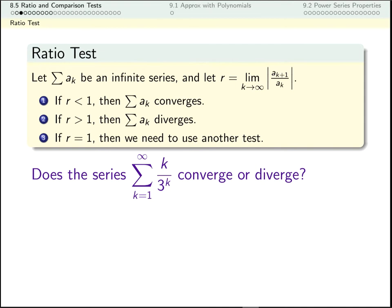So let's see how this test works. Here's a series, and I want to know whether it converges or diverges. Now it's a good idea to get in the habit of doing the divergence test in your head first. The things being added up look like k over 3 to the k. The numerator is a polynomial function, it's actually a linear polynomial function. The denominator is an exponential function.